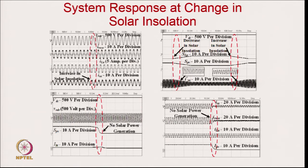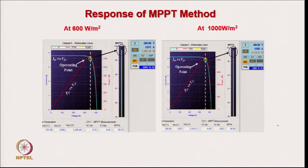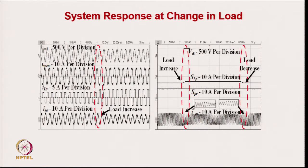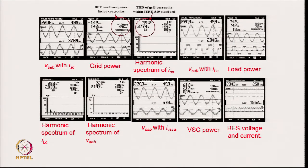When solar irradiation level changes, the grid current is not significantly affected because the battery takes care of the solar intermittency, even when there is no solar generation. Maximum power tracking is demonstrated at 600 W/m² and 1000 W/m². The grid current THD is of the order of 3.5 percent and grid voltage THD is 2.2 percent. In islanding mode, the voltage THD is 2-3 percent even while feeding a highly nonlinear load current with THD of about 28 percent.